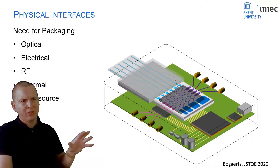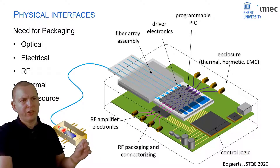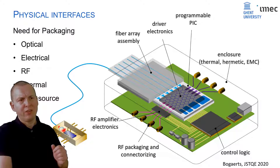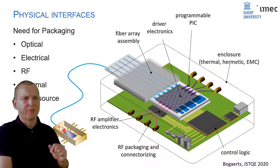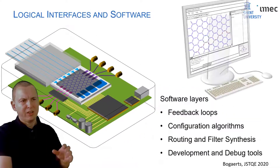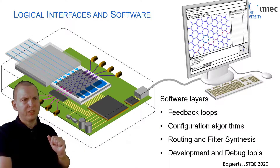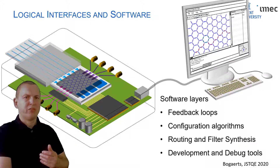The physical part is essentially a package where you bring together your photonic chip, your electronic control chips, your fiber connections, and your high-speed electronic connections — all sufficiently stabilized and packaged together. On top of that, you need software layers to keep all your couplers in the correct state, and ultimately a toolset — a software layer that can help users get started easily.